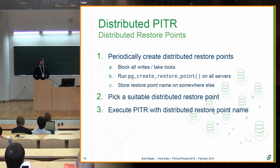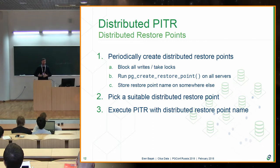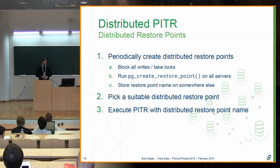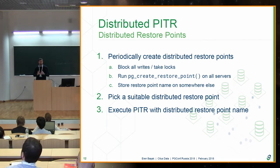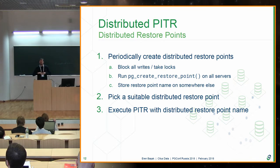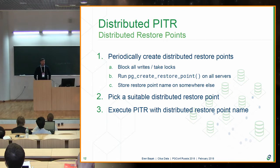The solution is what we call distributed restore points. Periodically, first block all write and modification operations to your data, then run pg_create_restore_point with the same name on all nodes simultaneously. Finally, store that restore point name and its datetime somewhere outside your cluster. This ensures your distributed restore points are consistent. Later you can do point-in-time recovery using the distributed restore point name instead of a timestamp, and recover to a correct, consistent state.